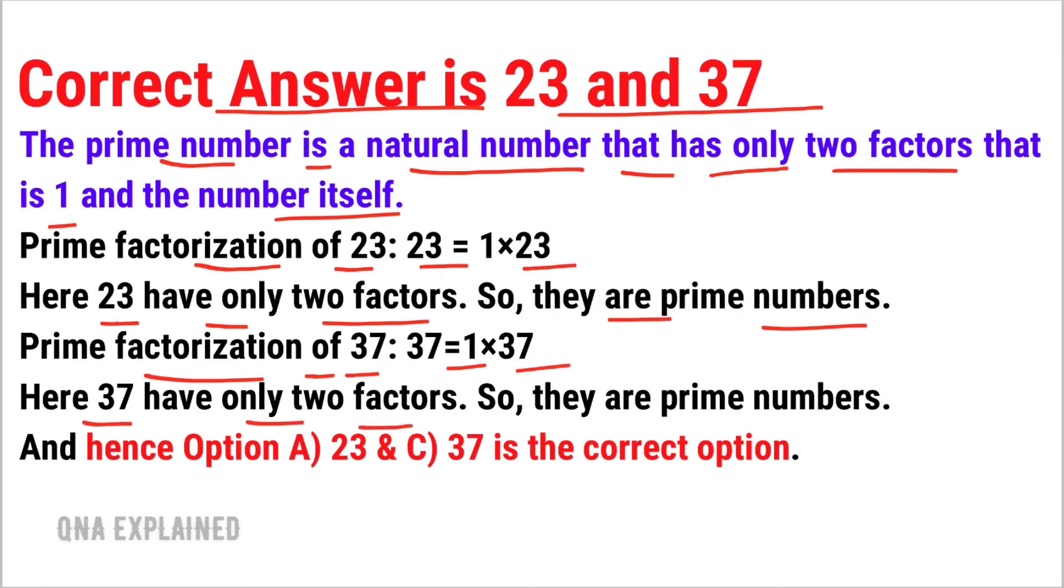has only two factors, so they are prime numbers. And hence option A, 23, and option C, 37, is the correct option.